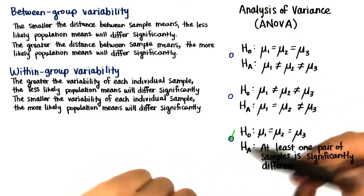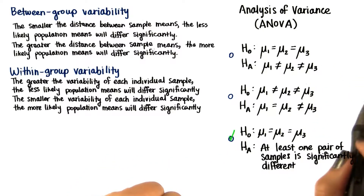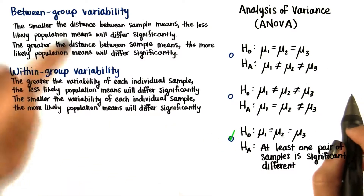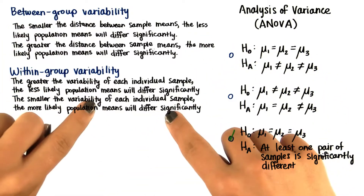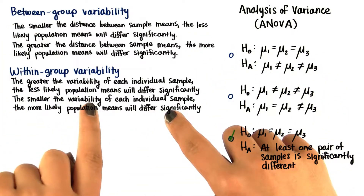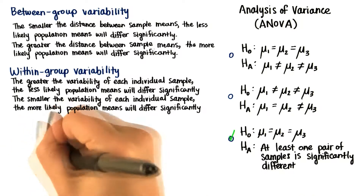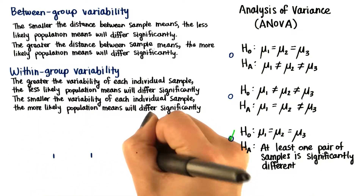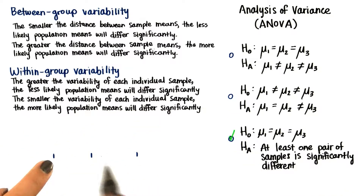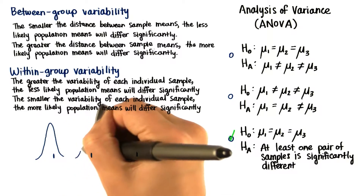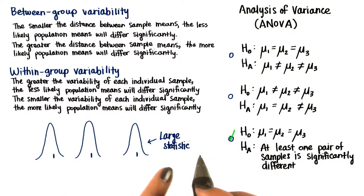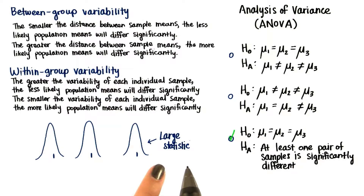But if we get a large statistic, the opposite is true. The between subject variability is large relative to the within subject variability. In other words, we might have some samples, and the means are different from each other relative to each variability. But then we know that at least one pair of means is significantly different, so we accept the alternative hypothesis.